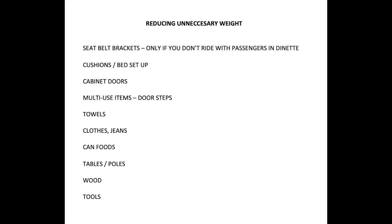Try to use multi-use items. We have doorsteps that we use as the middle between our seats for our pet when we're traveling — we put a cushion on it — and then when we get there, we use the doorstep out front. Towels weigh a lot. Do we really need more than two towels in the motorhome if we're just going for a week? Clothes — jeans are very heavy. Canned foods — it's not a place to store your canned foods; take what you need on your trips.